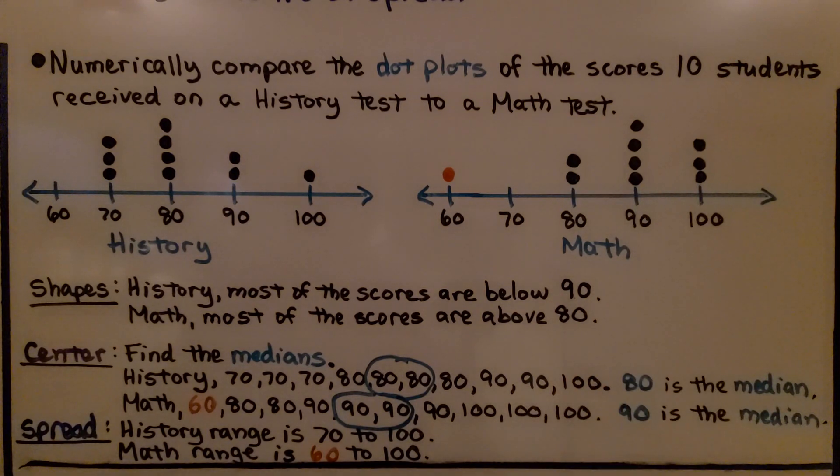For the center, we find the medians. We list the values from least to greatest and find the center value. 80 is the median for history. For math, the median is 90.